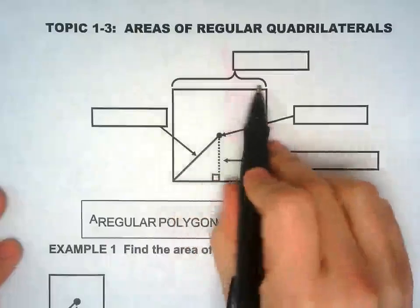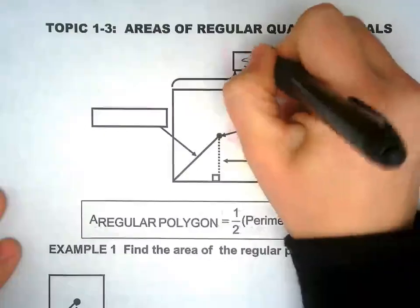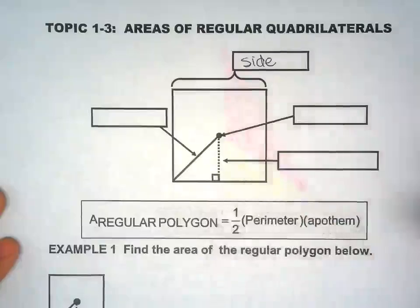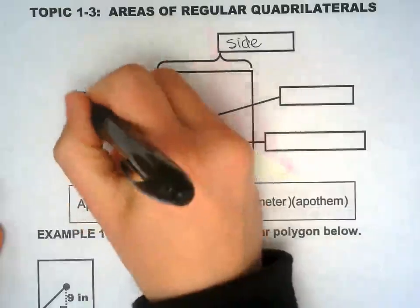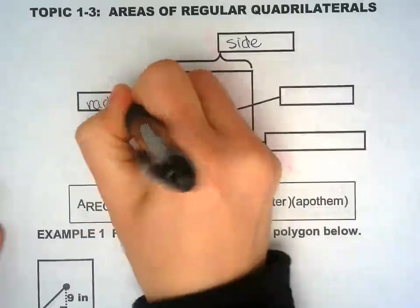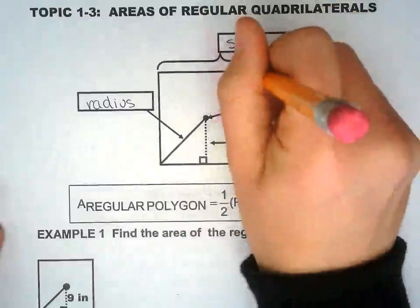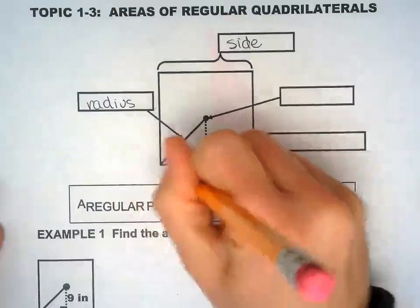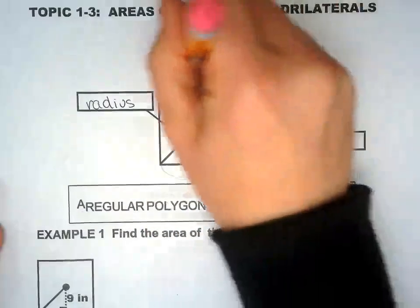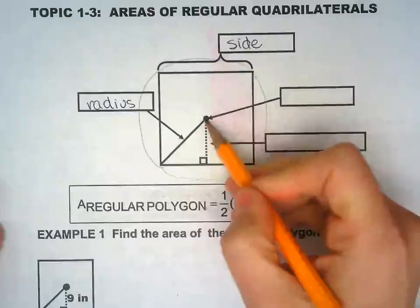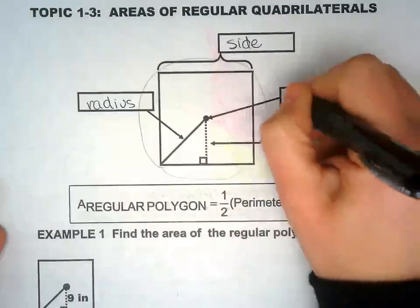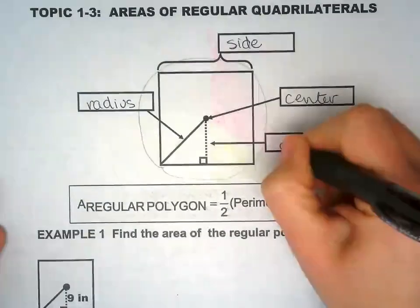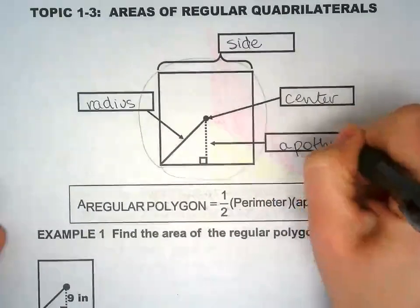So quadrilaterals, everybody knows this is the side. And this is a square, not simply a quadrilateral. Again, this is the radius, for the same reason the other one is the radius on the triangle. If you were to draw a circle around it, this would be the radius of the circle.